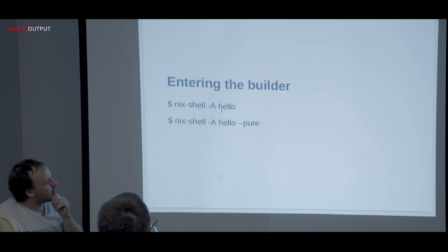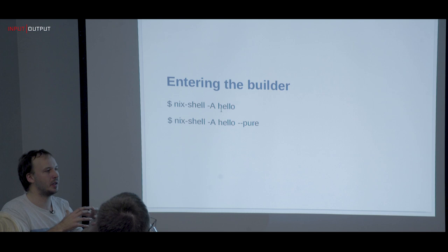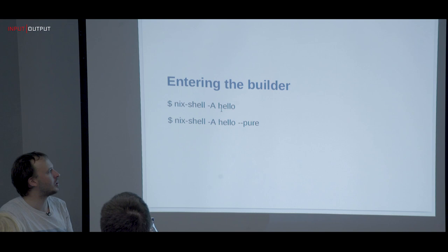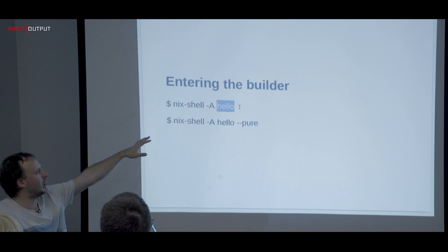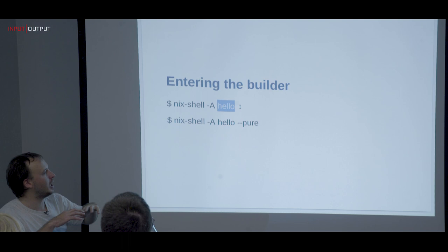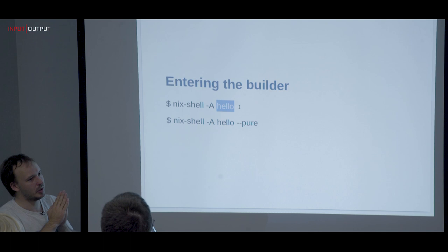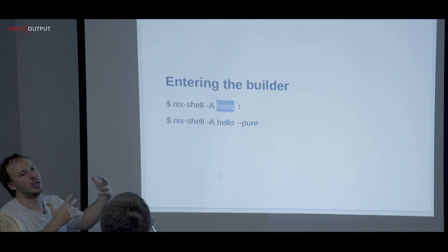There's the concept of entering the environment in which the builder will build the derivation — this is where `nix-shell` comes in, the development tool. If you have a `default.nix` file and enter a specific derivation attribute, instead of actually building the derivation, it takes the inputs and enters a shell with all those inputs present. Because our builder is bash, you get into a bash environment with all inputs that would be used to build that package.